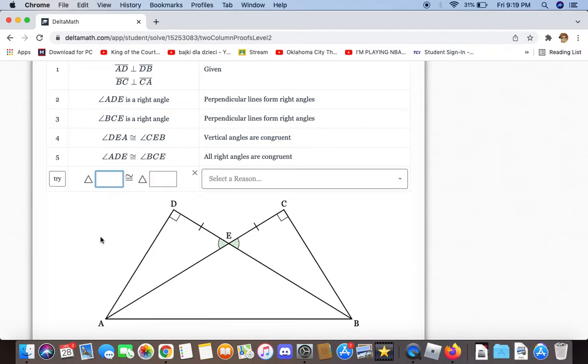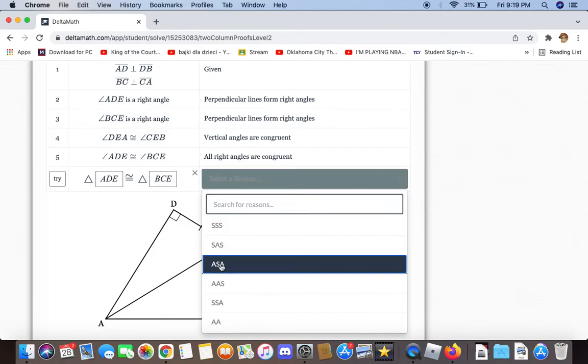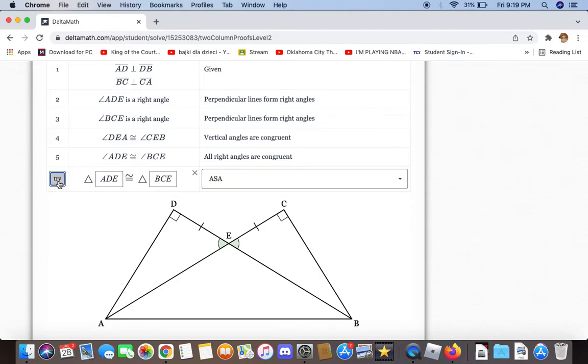We have enough information to prove that triangles ADE and BCE are congruent, and the reason is angle-side-angle.